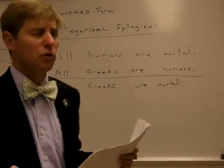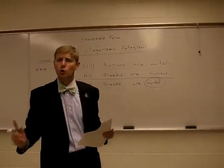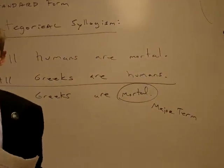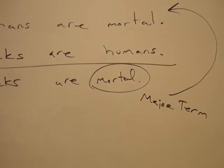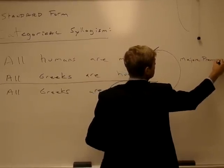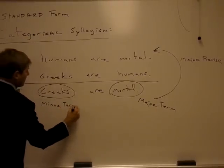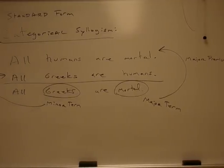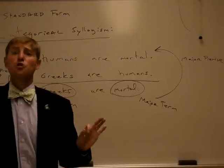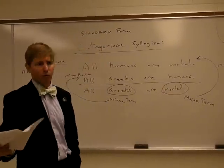One other nuts and bolts item: whatever the predicate in the conclusion is, we call that the major term. The major term will be found in the first premise, which we call the major premise. The subject of the conclusion we call the minor term, and the minor term will be found in the second premise, which we call the minor premise. This is all just nomenclature — it's one of those things that one just needs to put into one's proverbial memory banks.